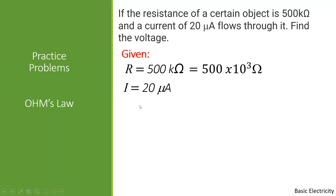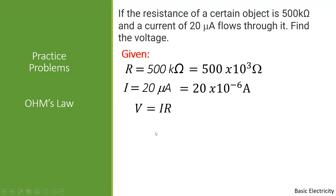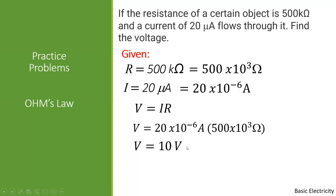The same applies to current: 20 micro Amperes equals 20 × 10⁻⁶ Amperes, because micro is equivalent to times 10 to the negative 6. It is very important that these prefixes are considered every time we encounter them in a problem. Using V = I × R and substituting all given values, you will get a product of 10 volts.